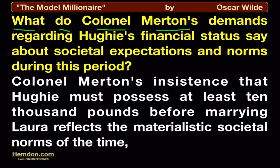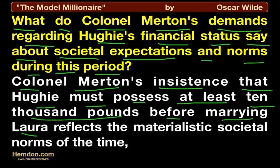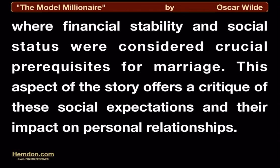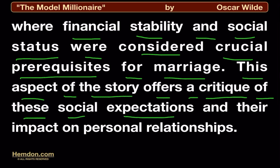What do Colonel Merton's demands regarding Huey's financial status say about societal expectations and norms during this period? Colonel Merton's insistence that Huey must possess at least 10,000 pounds before marrying Laura reflects the materialistic societal norms of the time, where financial stability and social status were considered crucial prerequisites for marriage. This aspect of the story offers a critique of these social expectations and their impact on personal relationships.